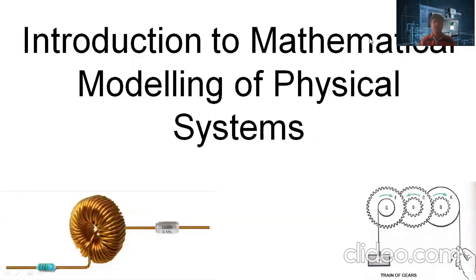Welcome to the course on control system engineering. In this video, we are going to learn the mathematical modeling of physical systems. We already know that the control system is the connection of different physical components connected to achieve an objective. To achieve this objective, we need to derive the relation between different physical components of a system. This input-output relation of a system is expressed by the differential equation, so that by solving these equations, we can know the response of a system under various input conditions. This process is called mathematical modeling of a system.